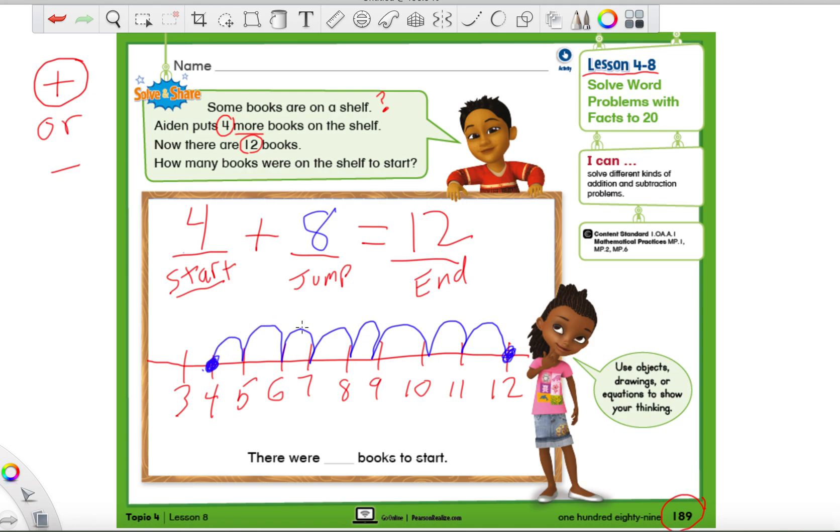1, 2, 3, 4, 5, 6, 7, and 8. So what is our missing number? It's 8, because we jumped 8 times. And you can just recount the jumps, the bumps, if you happen to forget. So down here where it says there were blank books to start, there were 8 books that we started off with.